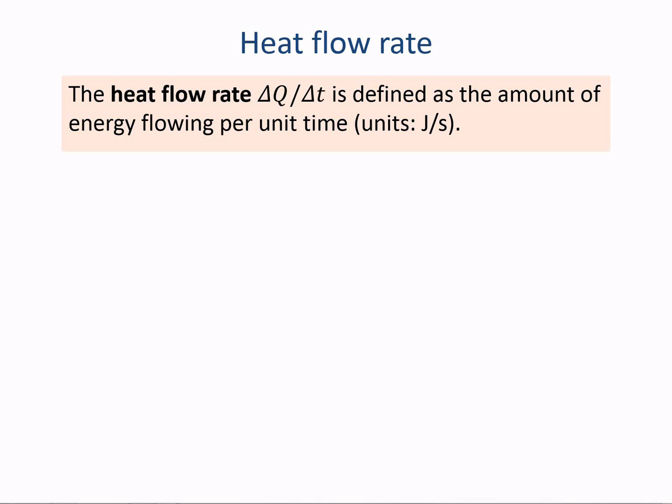First of all, let's define the flow rate of heat. Heat flow rate, delta Q over delta T, is defined as the amount of energy flowing per unit time, so that's measured in joules per second.